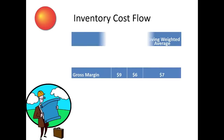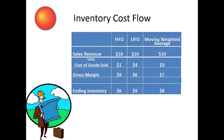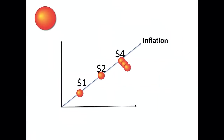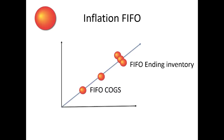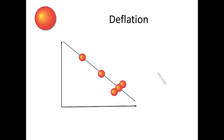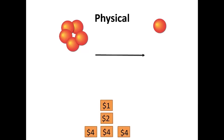In summary, the inventory cost flow assumption a company uses does have an impact on the gross margins, net income, and ending inventory the company will report. FIFO shows a gross margin of $9 and ending inventory of $6; LIFO a gross margin of $6 and ending inventory of $9; Moving Weighted Average a gross margin of $7 and ending inventory of $8. In this example, prices were rising, indicating an inflationary environment — in which FIFO will result in the highest gross margins and the lowest ending inventory. The physical movement of goods was exactly the same in all cases; it is simply the cost flow assumption used that changes the results reported on the income statement and balance sheet.